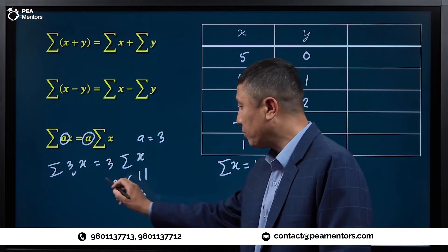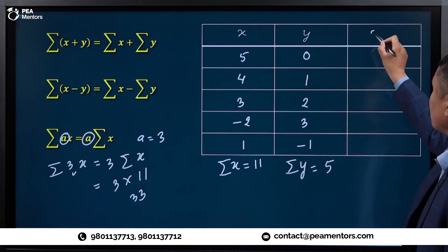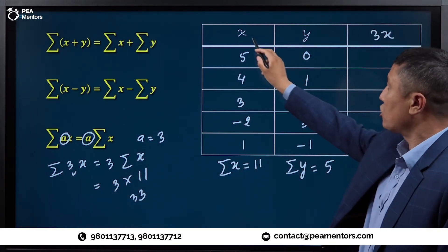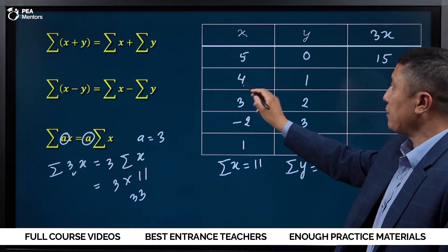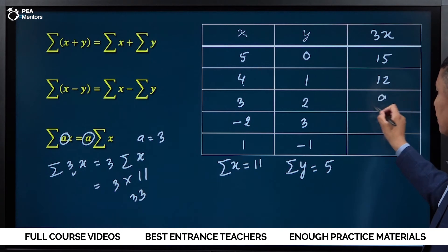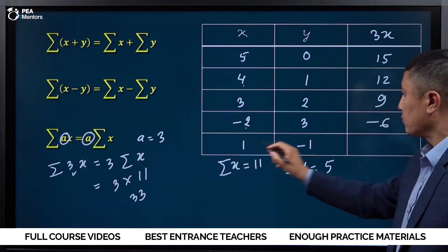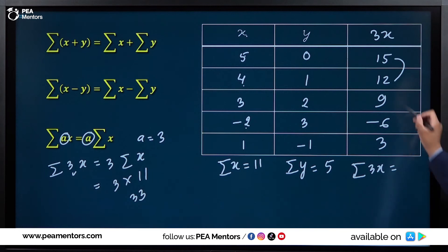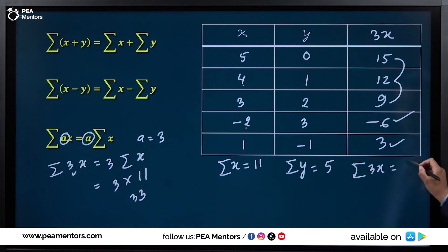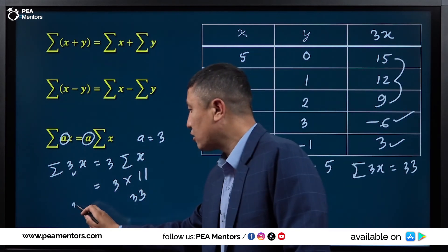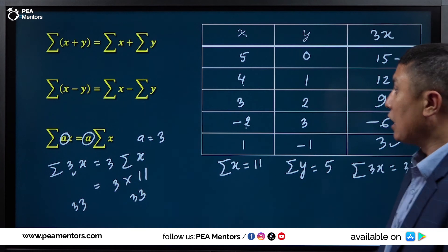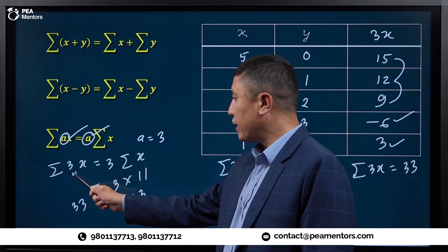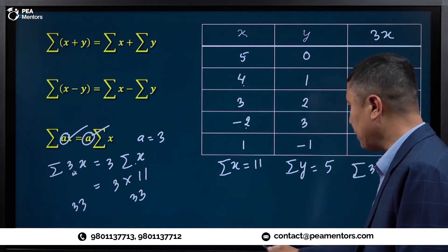Now, 3 times x is 15, 3 times x means 12, 3 times x is 9, minus 6 is 3. The summation of 3x: 27 and 9 is 36, 36 and 3 is 39, 39 minus 6 is 33. This is 33. This is where we can use the constant term — a constant term in multiple form is able to be broken out.